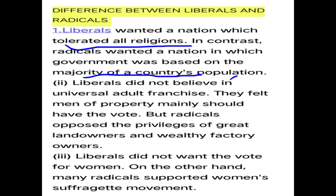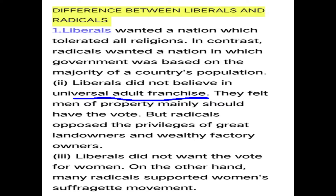Both liberals and radicals wanted universal adult franchise, but the key difference is that liberals did not advocate the right to vote for women — they felt only men of property should vote. Radicals, however, wanted women to have the right to vote. Radicals also opposed the special privileges enjoyed by great landowners and the wealthy, whereas liberals supported the right to accumulate property.